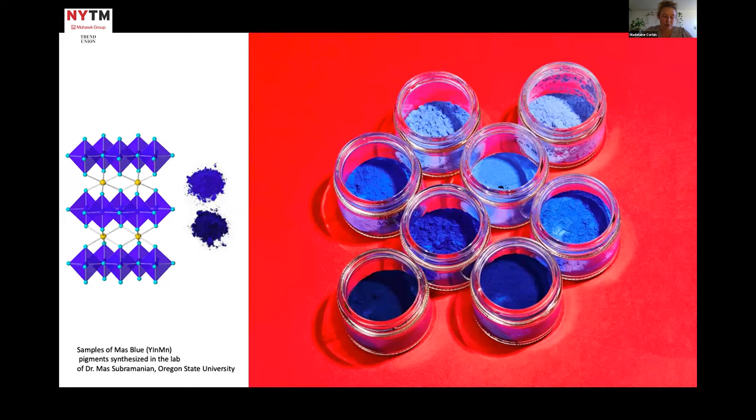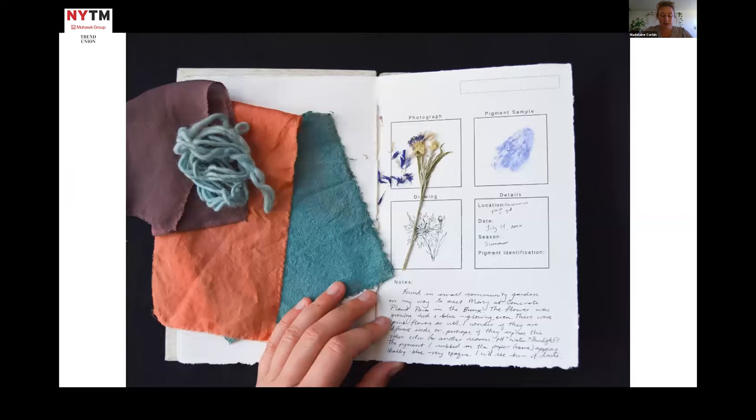After my artist residency in a chemistry lab where I synthesized new inorganic pigments, I began to make my own botanical dyes. In 2016, I first noticed a cornflower growing a vivid blue. It reminded me of the blue I made in the lab, but instead of mixing an amalgam of rare earth materials at extreme temperatures, this blue grew from the soil all on its own.